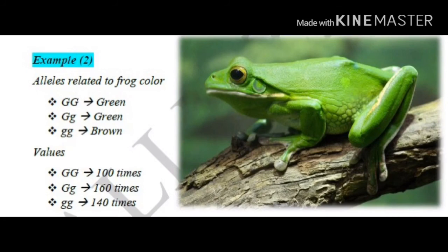Now, in this last example, we'll be talking about frog color. The alleles related to frog color are G and small g. The genotypes are GG (green), G small g (green also), and small g small g (brown). We have to understand here that this is complete dominance — not incomplete dominance like we saw before — because G is completely dominant over small g, giving us green and not a mix of green and brown. The values are 100 GG, 160 G small g, and 140 small g small g. Please pause the video and try to solve the genotypic and allelic frequencies.